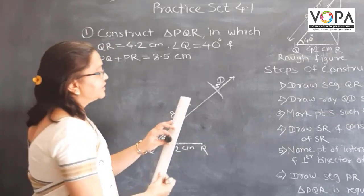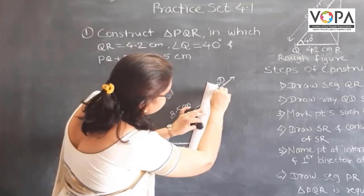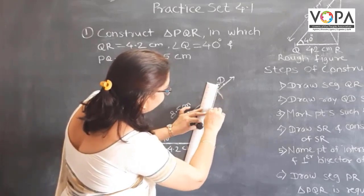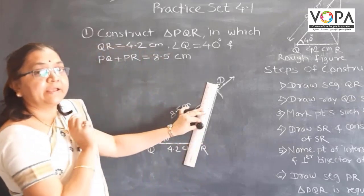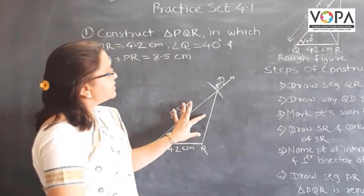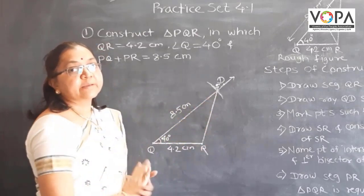Then join these points S and R. Here we have to draw the perpendicular bisector of this segment SR.